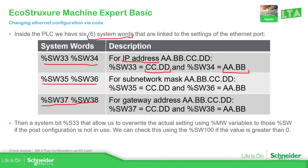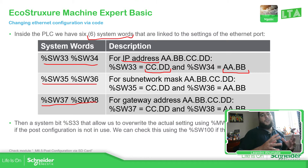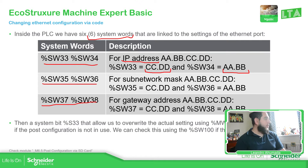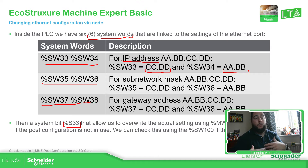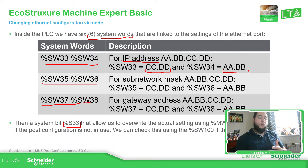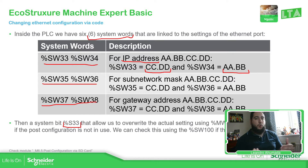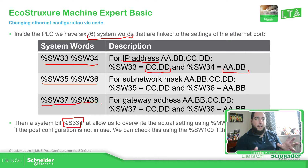These memory words show the actual configuration we have. If we use the system bit %S33, what we can do is override those values, which will change the actual IP address, subnet, and default gateway configuration in our controller. If we want to show externally which is our actual IP address, we can move the %SW variables into %NW variables so we can share this data to our HMI. To change these values, we send a true value on bit %S33 to override the configuration.